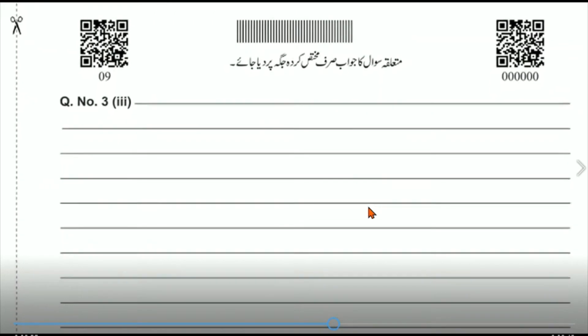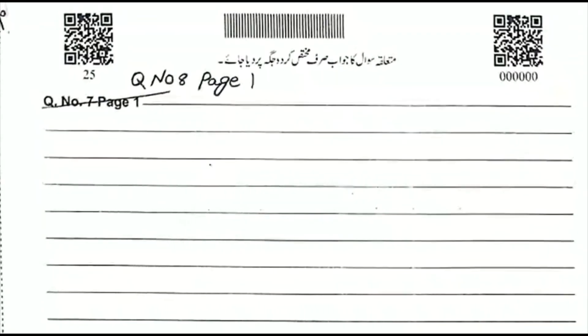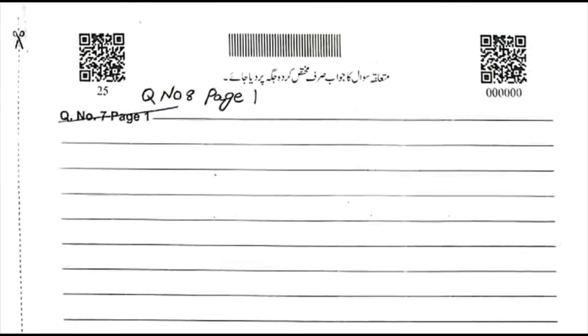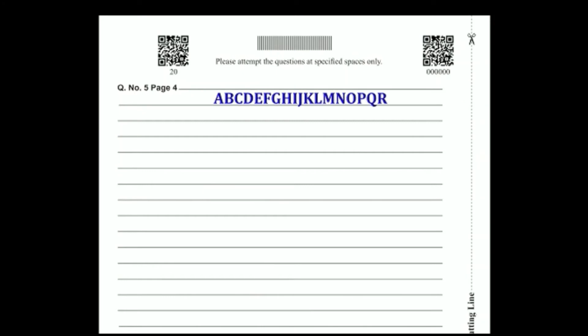Answer the proper question. For example, if you are solving Section C, Question 3, Part 4, write the answer on the given place on the e-sheet. Do not cross out any question or change any answer.